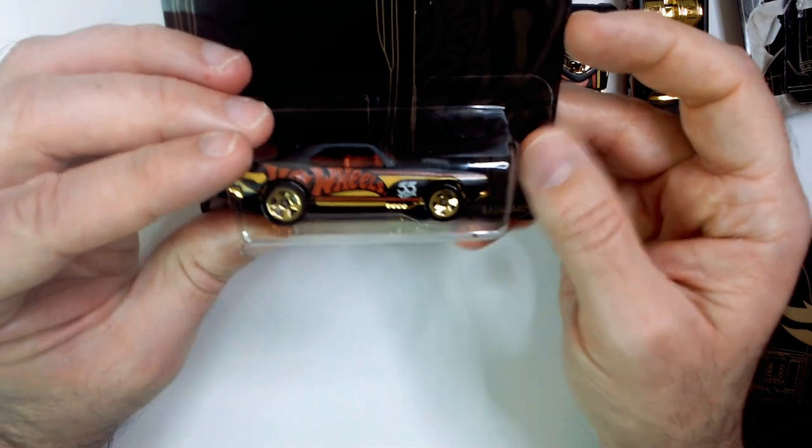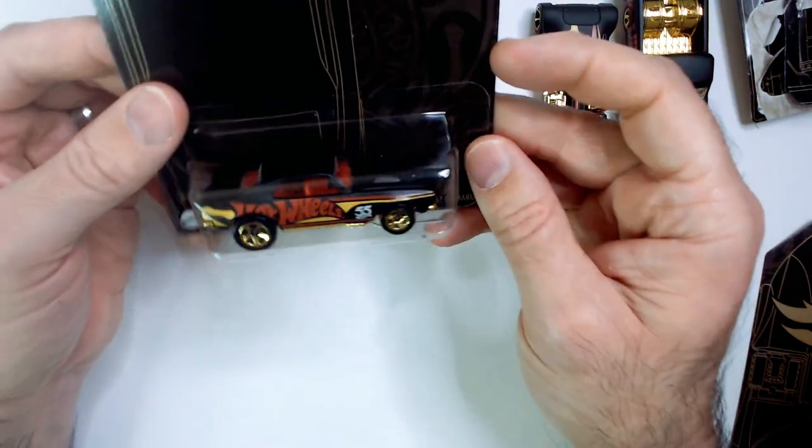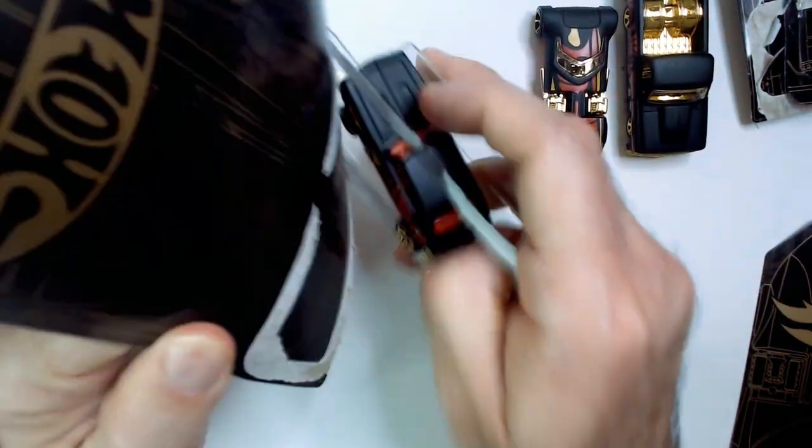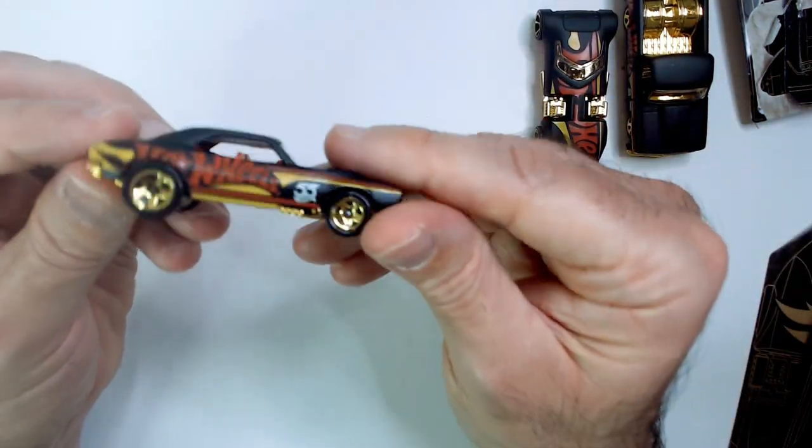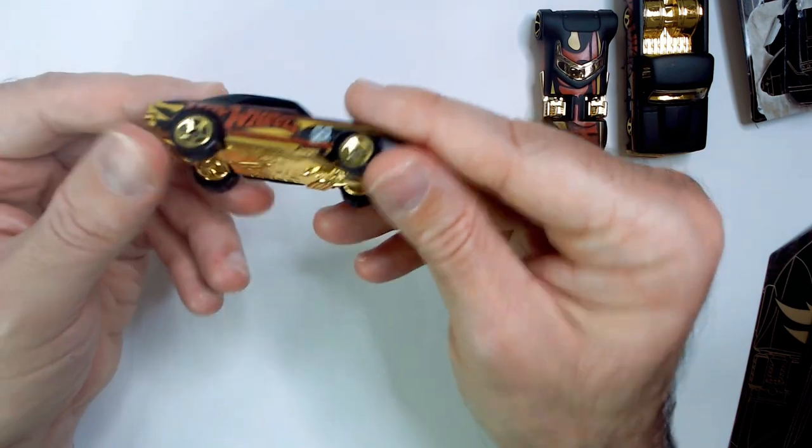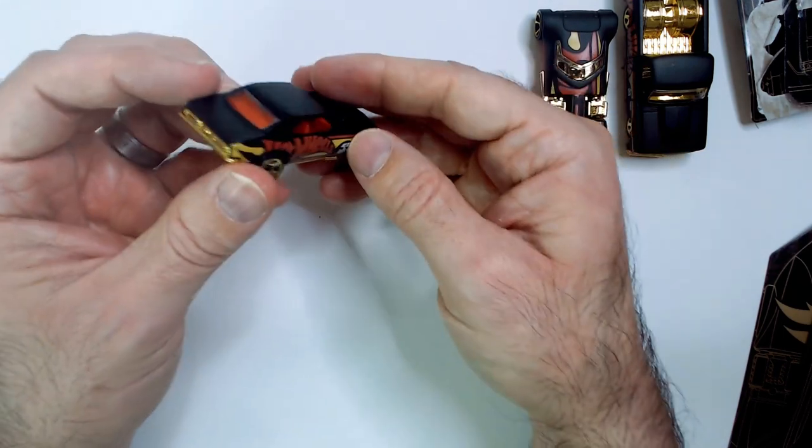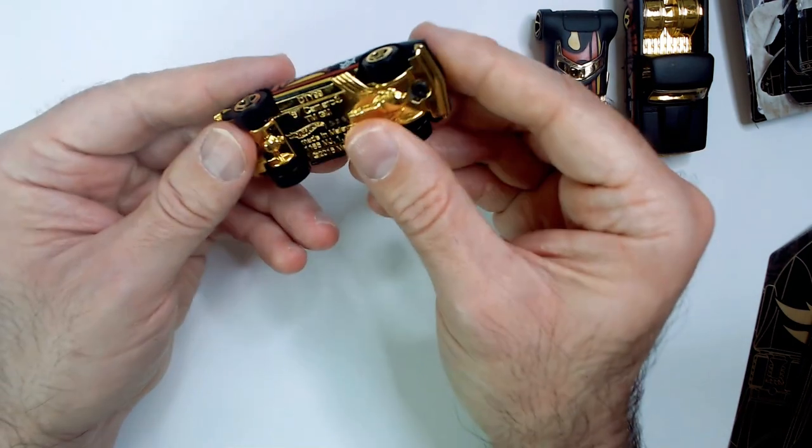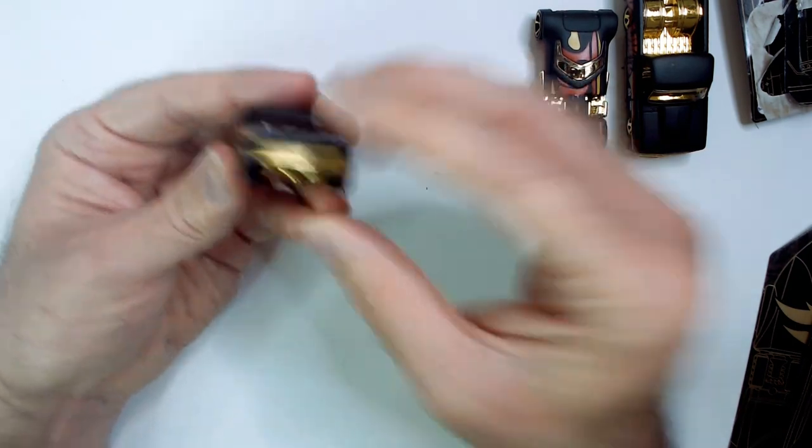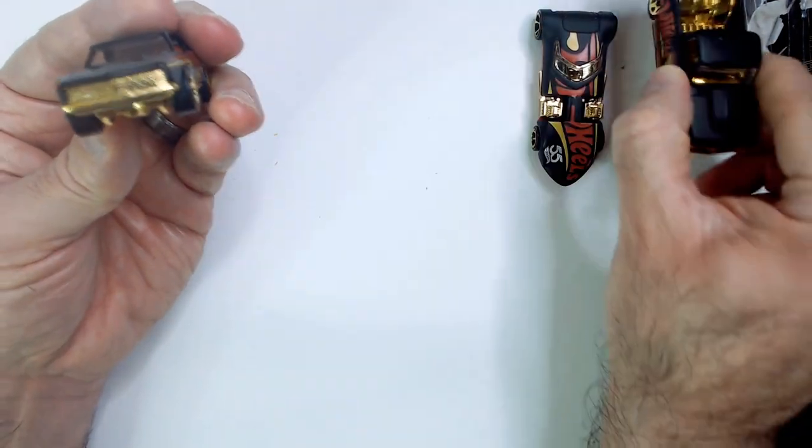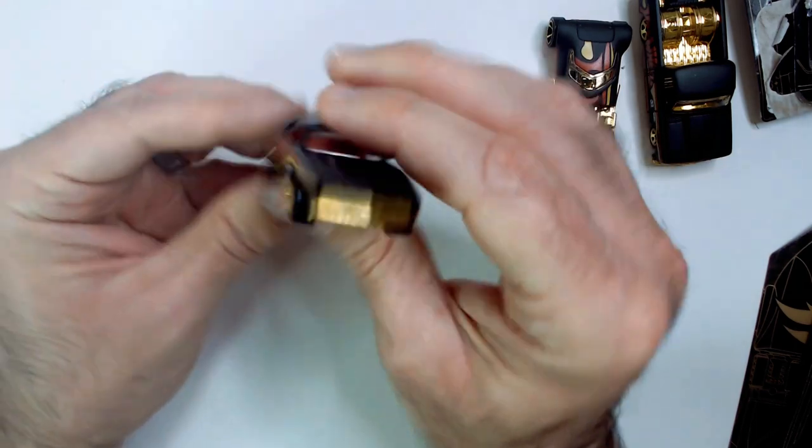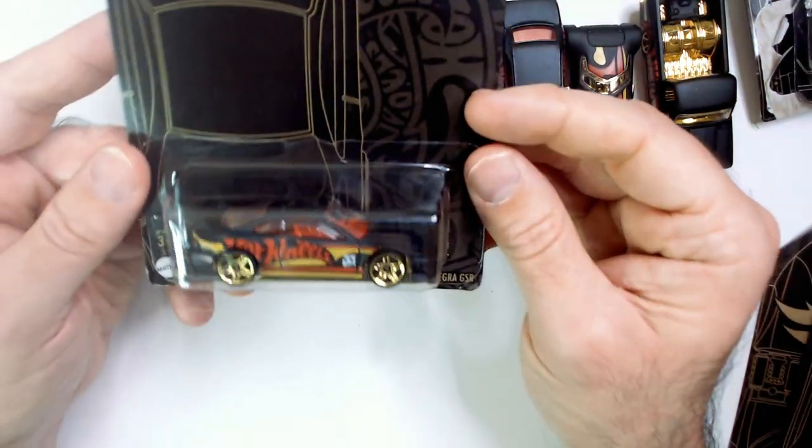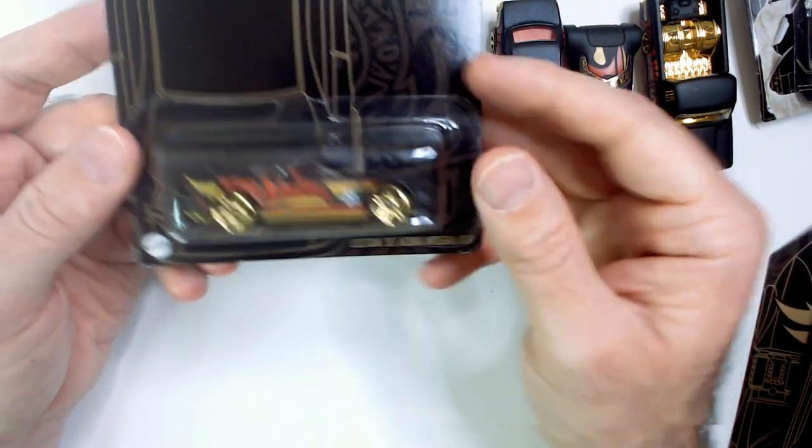Next up is the 67 Camaro in the matte black. That's a gold bottom, red interior - a little different choices. Got red and gold interior. Again, good-looking car, the Camaro. We got a custom Acura 01 Integra.